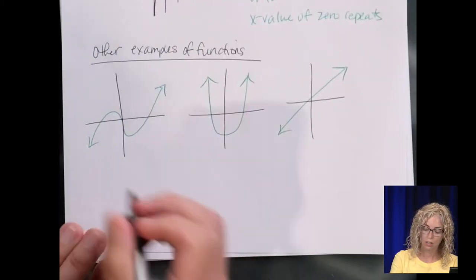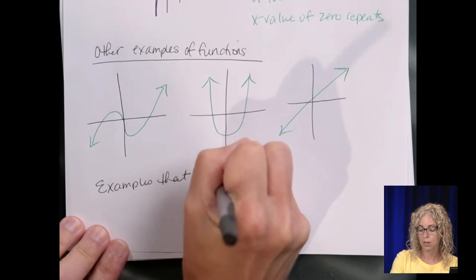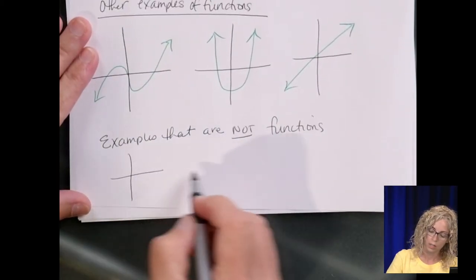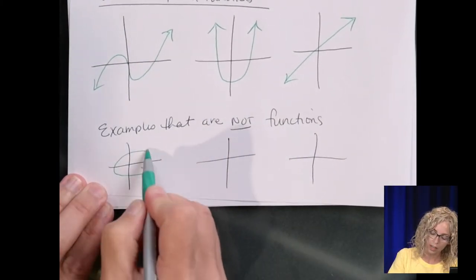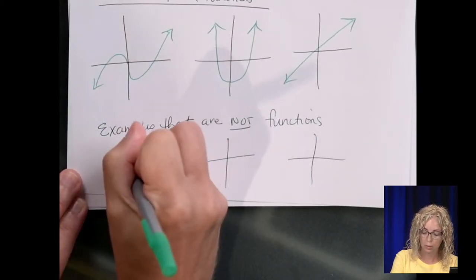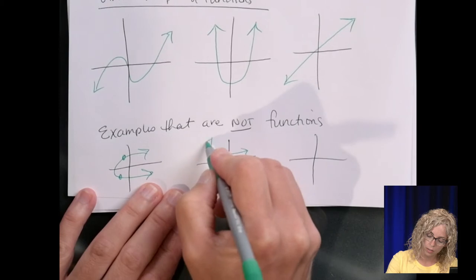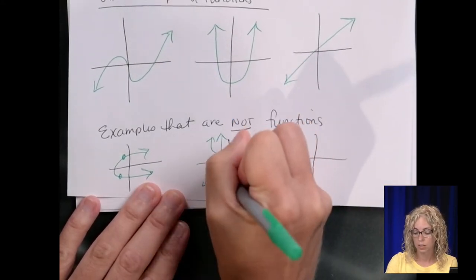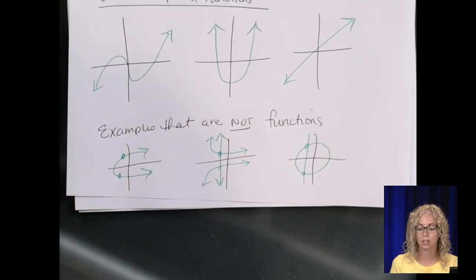Graphs that are not functions. Examples that are not functions, we'll do three again. It would be a parabola on its side. As you can see, it crosses it twice. Something like this, if something's broken up into two graphs, with that together, it's not a function. And then, of course, the circle that you graph is not a function because it fails the vertical line test.